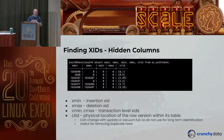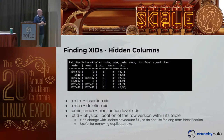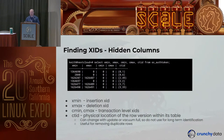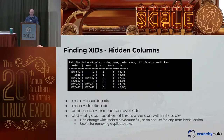There are also xmin and xmax for within your own transaction to manage visibility. Another hidden column worth mentioning is ctid — the physical location of a row within the table. You can use it to remove duplicate rows by deleting anything not equal to a specific ctid. However, you don't want to use it as a unique identifier because it can change if the table rewrites or a row is updated, since new ctids get assigned.